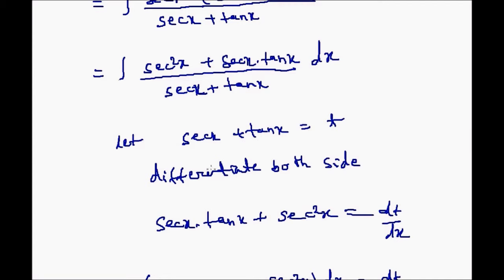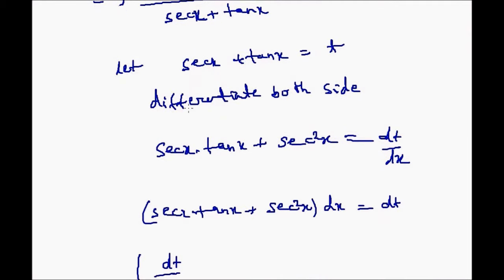Now we have to substitute, so differentiate this. Differentiation of sec x plus tan x is sec x into tan x plus sec square x. For tan x it is sec square x, for sec x it is sec x into tan x.